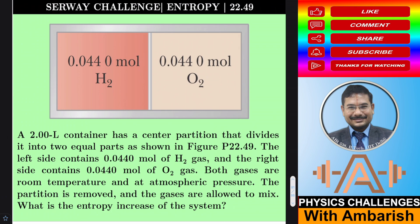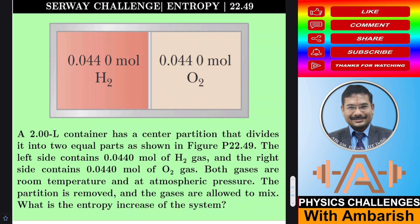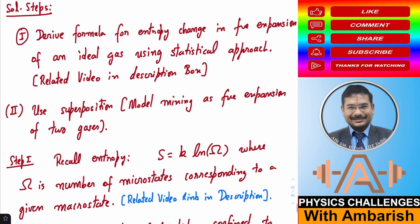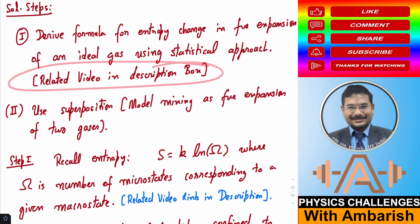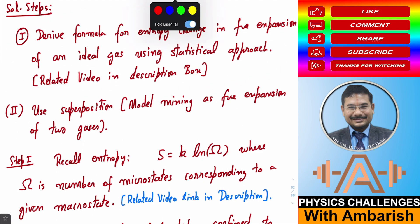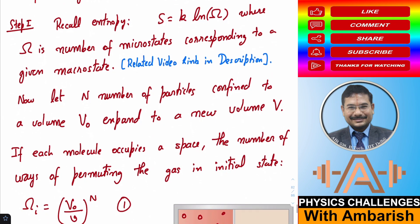You can give it a try first. My solution will first derive a formula for entropy change in free expansion of an ideal gas using the statistical approach — I've covered this in a previous KVPY problem video linked in the description. Then I'll model the mixing of gases as a superposition of free expansion of two gases and use that to find the entropy of mixing.